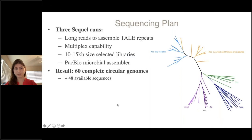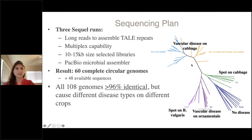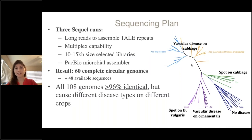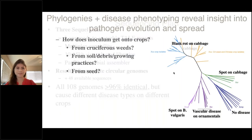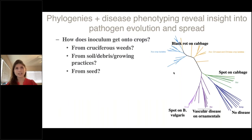We added these 60 genomes to the 48 already available sequences and used them to create a phylogeny based on SNPs. To be considered a bacterial species, strains have to be greater than 96% genetically identical, and in this case all 108 strains included in our analyses were. But despite that really high similarity, the strains grouped into multiple different clades, each causing a unique type of symptoms on a different set of plant hosts. Looking deeper into these relationships in conjunction with the disease phenotyping data, some really interesting results came out.